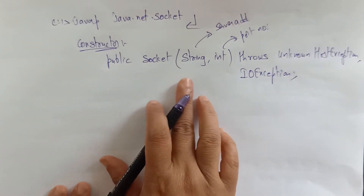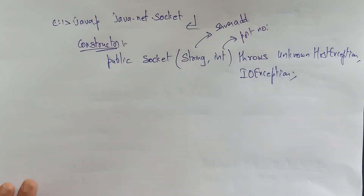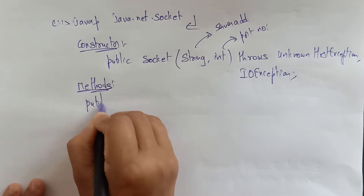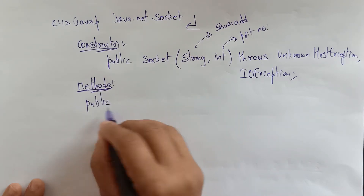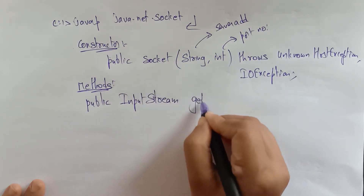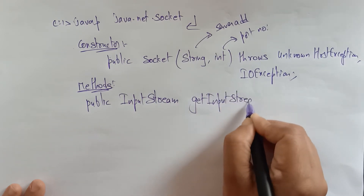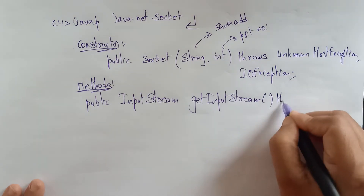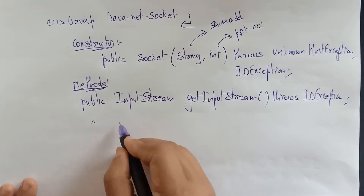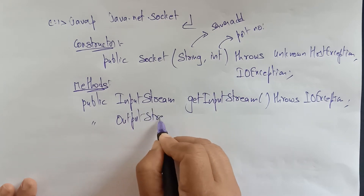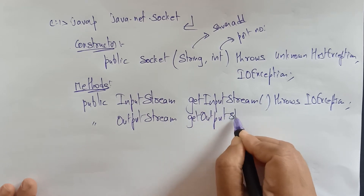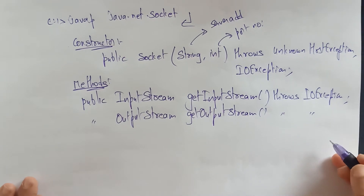The Socket constructor takes server address and port number. The methods I'm going to use are: public InputStream getInputStream() — where InputStream is the class name and getInputStream is the method — and if this method fails it throws IOException. Similarly, public OutputStream getOutputStream() — if getOutputStream fails it also throws IOException.